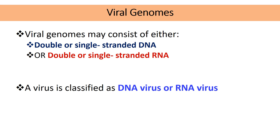Viruses have genetic material, and this genetic material can be either DNA — single-stranded or double-stranded — or RNA — single-stranded or double-stranded. For example, herpes virus has double-stranded DNA. Examples of viruses with RNA are Ebola, HIV, and coronaviruses. Examples of viruses with double-stranded RNA are rotaviruses. Depending on the genetic material, the virus is classified as a DNA virus or an RNA virus.